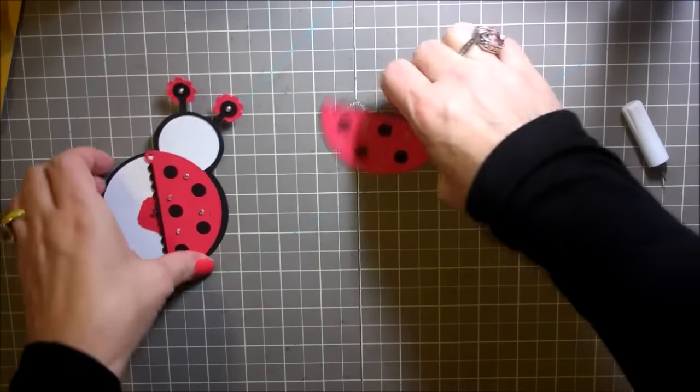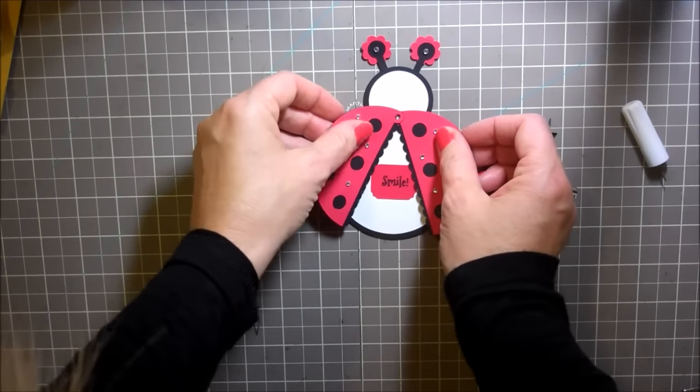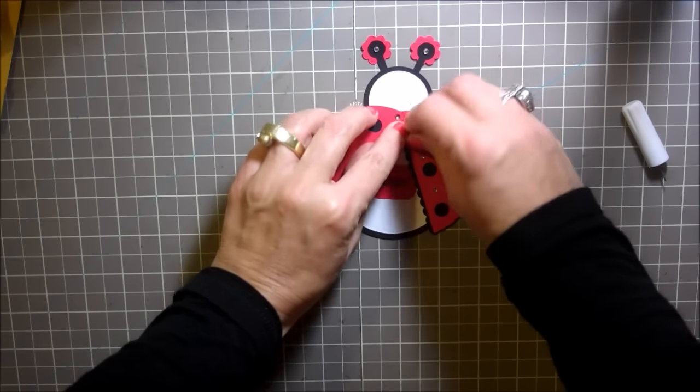Alrighty, and now you put these two together. You match all the holes up like that. You're going to push a little brad. I only had a square brad.